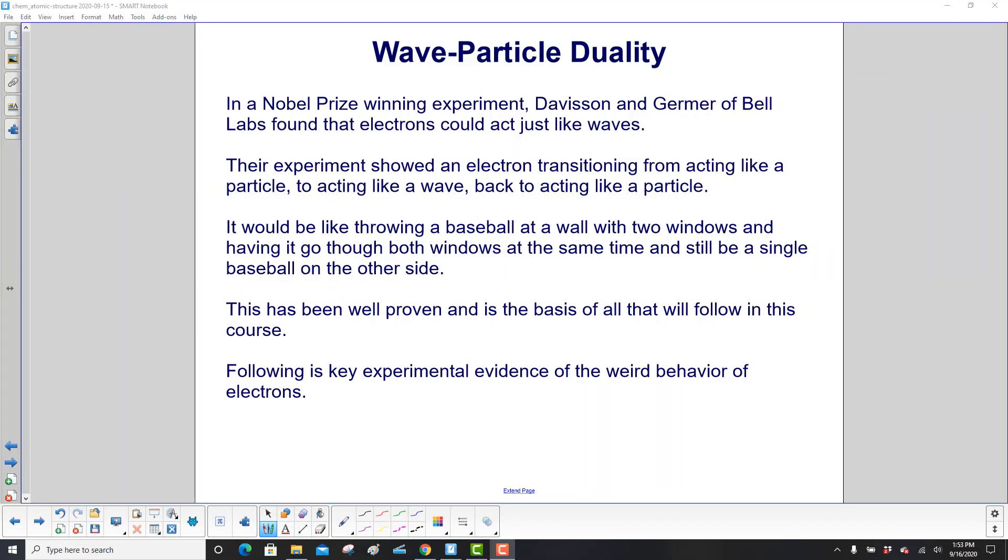In a Nobel Prize-winning experiment, Davison and Germer of Bell Laboratories found that electrons could act just like waves. Their experiment showed an electron transitioning from acting like a particle to acting like a wave and then back to acting like a particle.